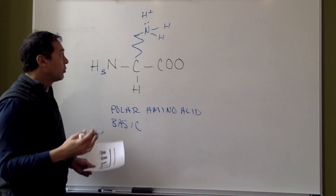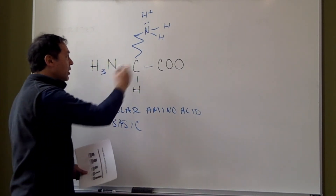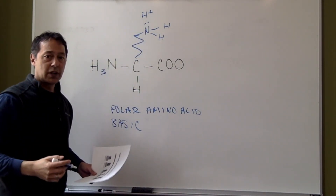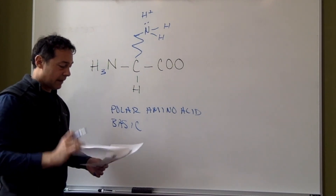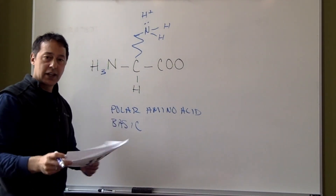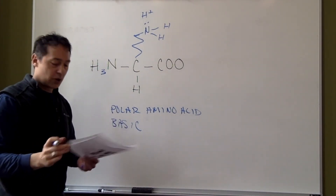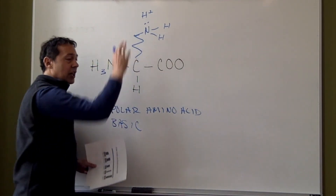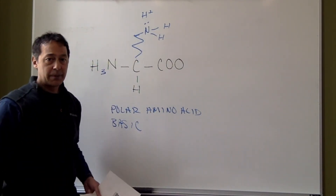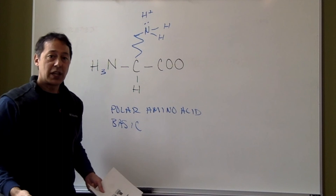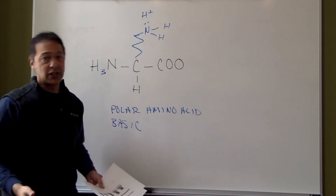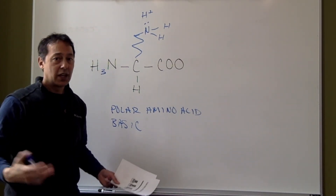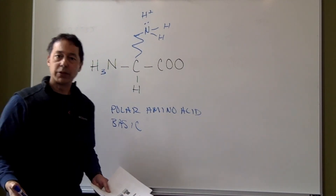So if we look and see nitrogen in our amino acid side chain, think polar, think basic. Now you don't have to memorize all of these side chains — there's a bunch of them. But I might ask you: can you identify, is this one polar? Is it nonpolar? Is it acidic? Is it basic? And you should be able to do that.